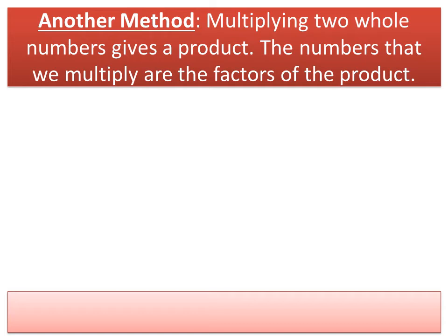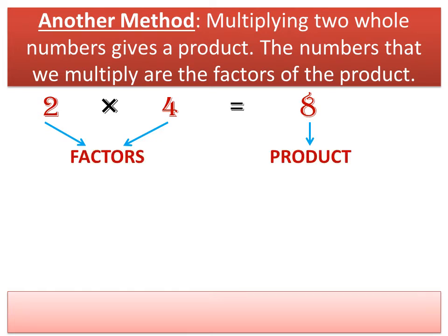There is one more method to find the factors. Multiplying two whole numbers gives a product. The numbers that we multiply are the factors of the product. For example, 2 multiplied by 4 equals 8. So 2 and 4 are the factors of the product 8.